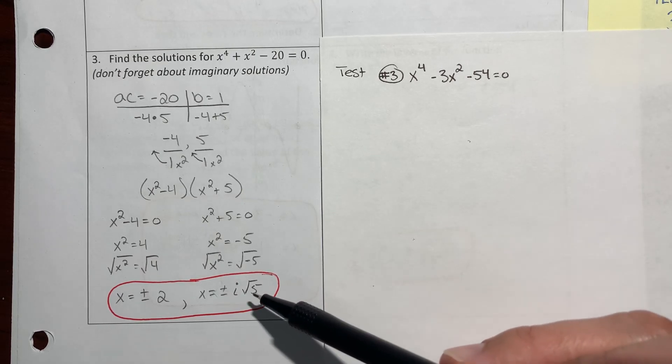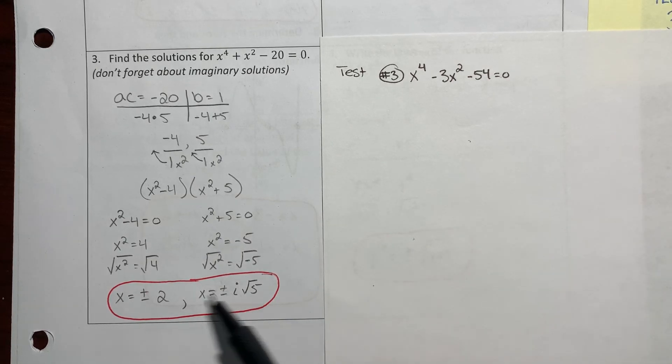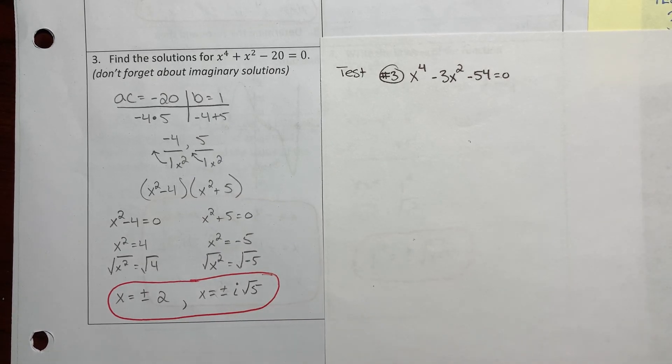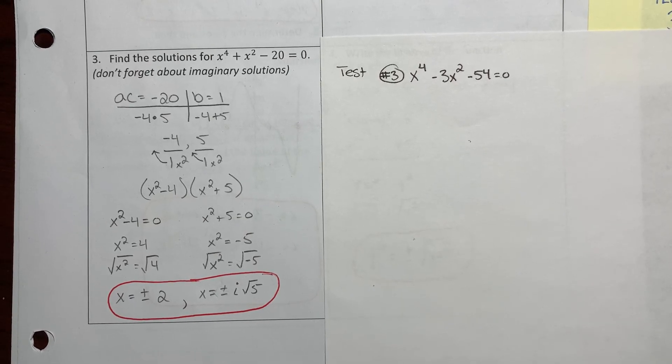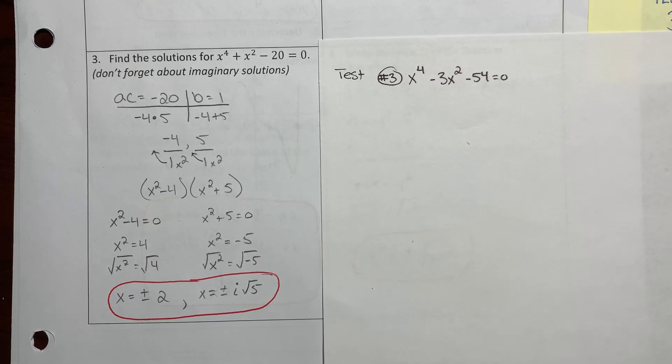Now when you look at your answer choices, whatever one of these answer choices is not on the test, that's the one you want to pick because you're looking for which one is not a solution.